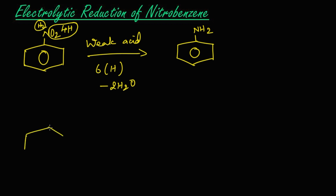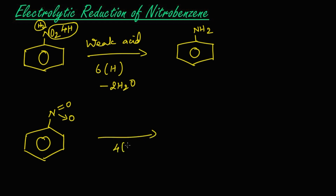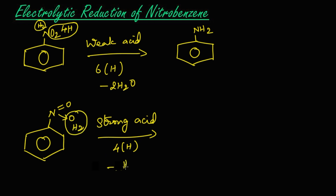Here, for convenience, I am writing nitrobenzene as N double bond O and N–O. Four hydrogens will take part in this reaction in a strong acidic medium. Two hydrogens and this oxygen will leave as a water molecule. The remaining two hydrogens — one hydrogen will get attached to this nitrogen and another hydrogen to this oxygen.